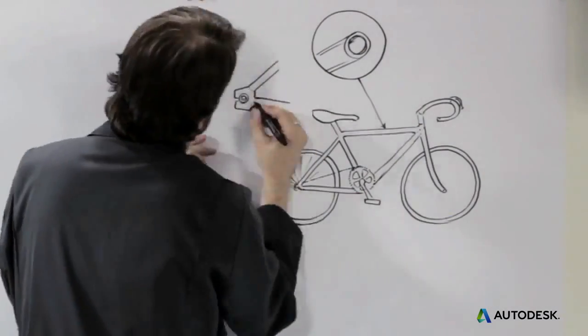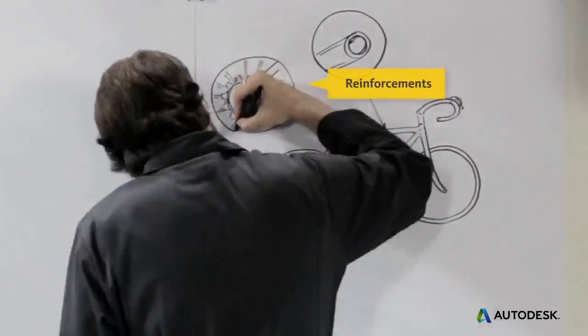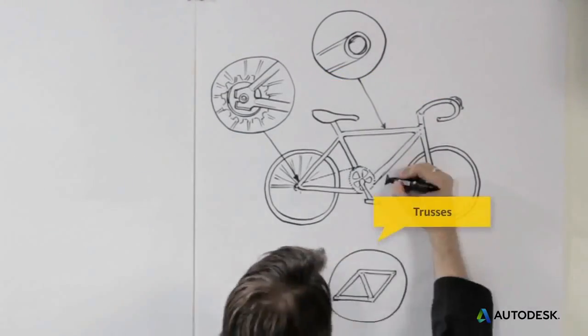Like hollowing parts and decreasing wall thicknesses, using reinforcements like posts and ribs, and using trusses.